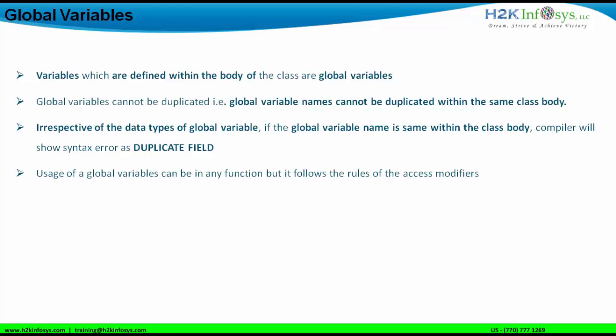We won't go very deep into access modifiers at this point. Just understand that the usage of a global variable can be in any function — you can use global variables across all methods present in a particular class, or in other classes too, based on the access modifier being used.